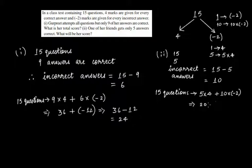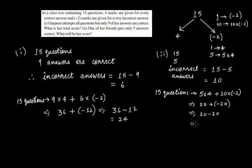This gives 20 plus 10 times minus 2 is minus 20. So the answer is 20 minus 20, and she will get zero marks — that is, her score will be zero.